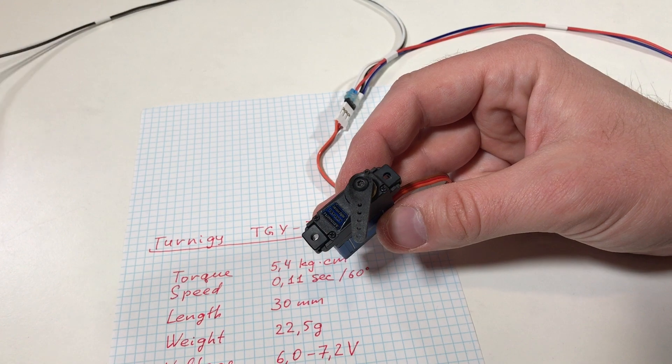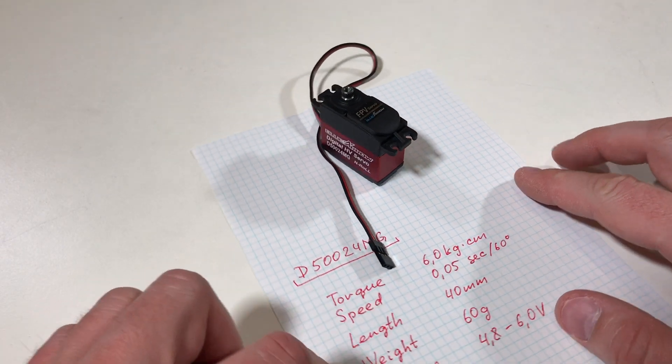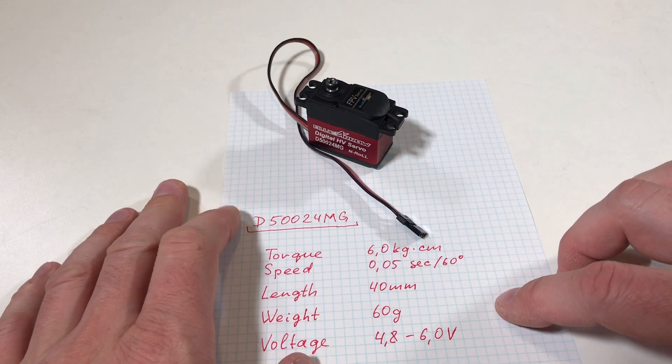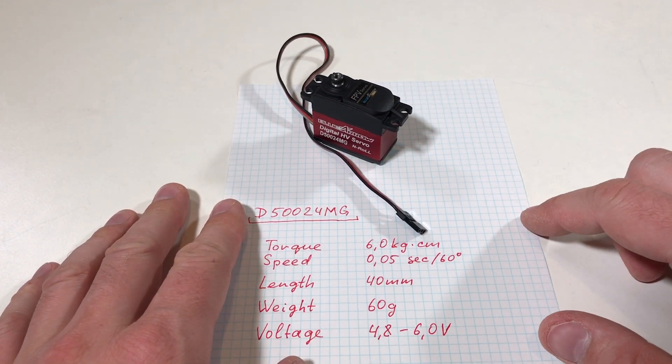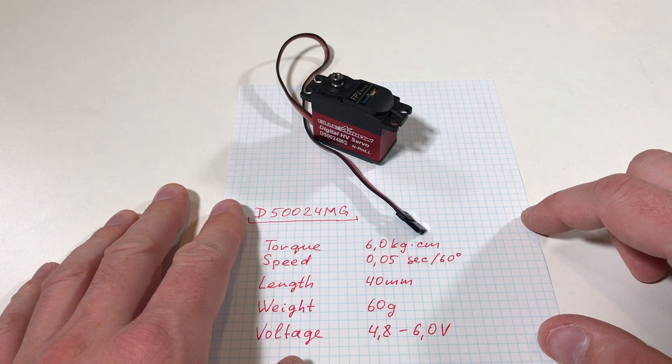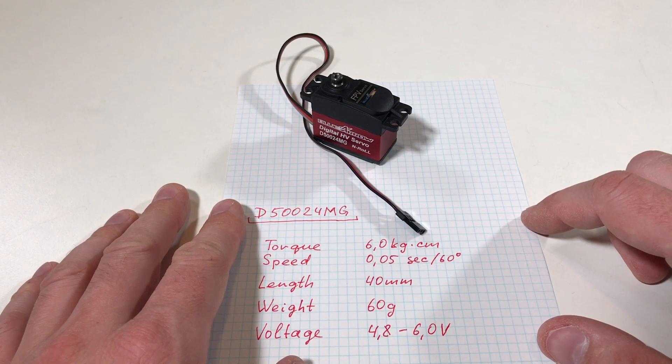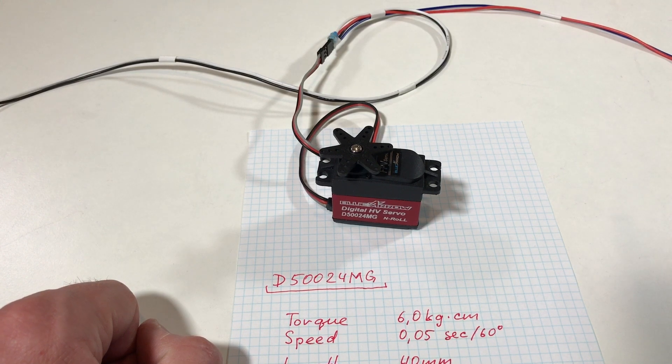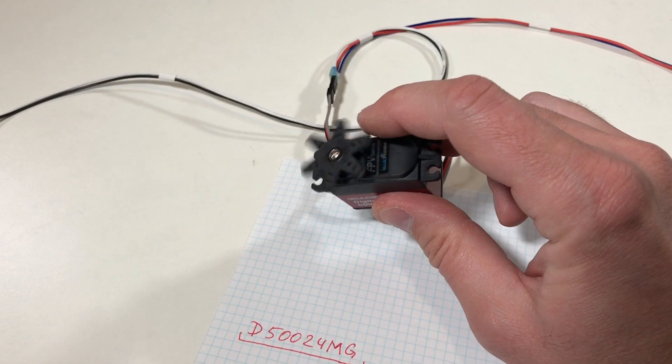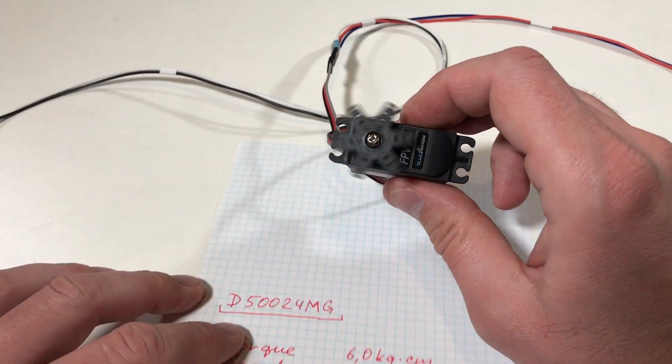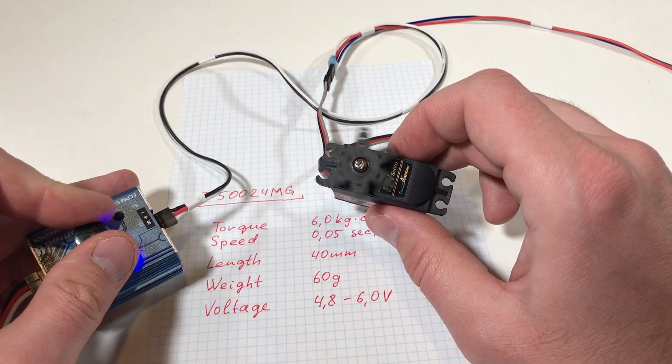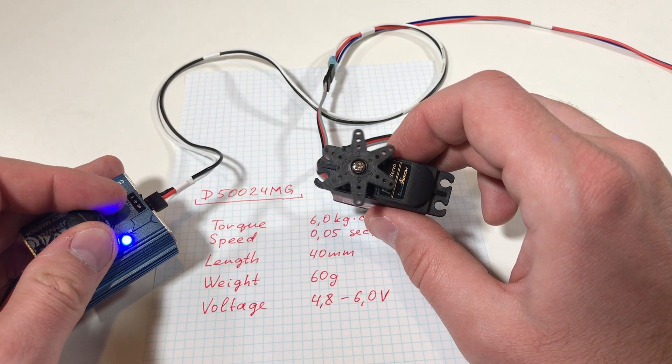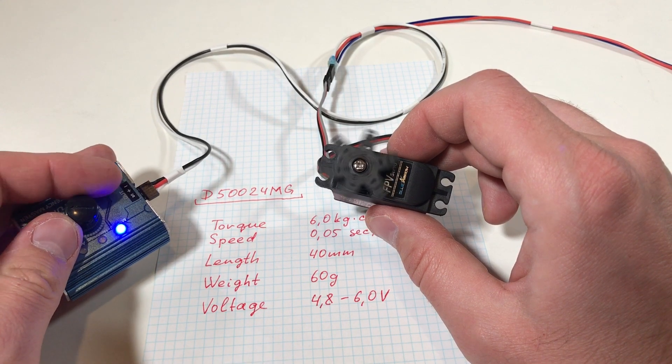This one is a little bit special, and why? Because it can rotate 360 degrees, and actually you don't control the position, you control the speed. Everything is connected, now let's switch it on. It's quite fast and also quite powerful. Full speed in one direction, neutral position, full speed in another direction.